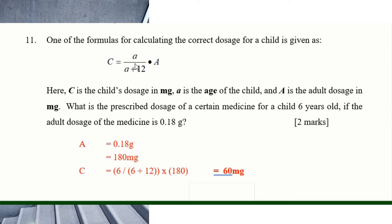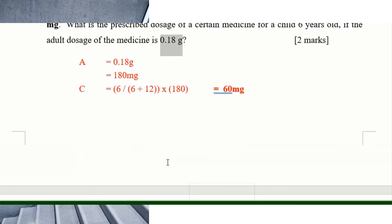Number eleven uses a formula for calculating a child's dosage, where c is the child's dosage, a is the age of the child, and A (bolded) is the adult dosage in milligrams. The child is six years old, so a equals 6. The adult dosage is 0.8 grams — bolded because it's in grams, not milligrams. Convert: 0.8 grams times 1000 equals 800 milligrams. Substitute 800 for A and 6 for a to find the child's dosage.